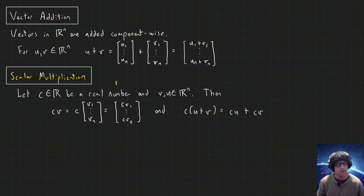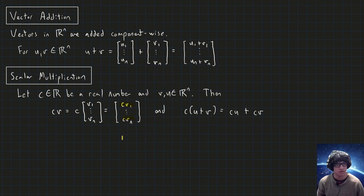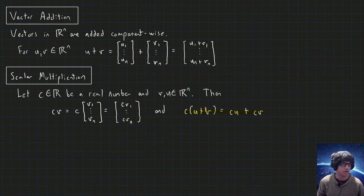Now scalar multiplication of vectors: suppose you have a vector v and you multiply it by a scalar constant c, where c is just some real number. You simply multiply each component of v by c. This is sometimes called scaling the vector v by c. Addition and scalar multiplication interact with a nice distributive property.